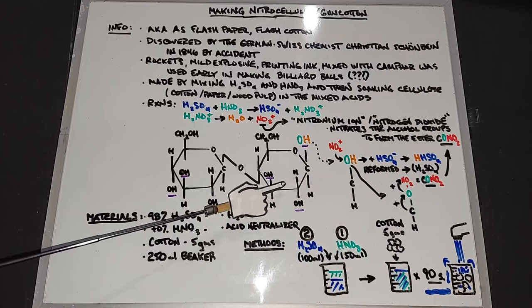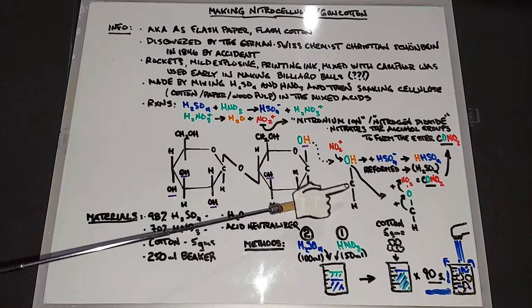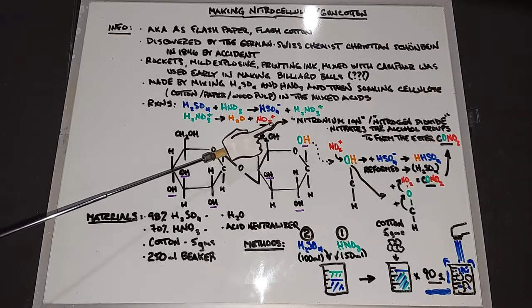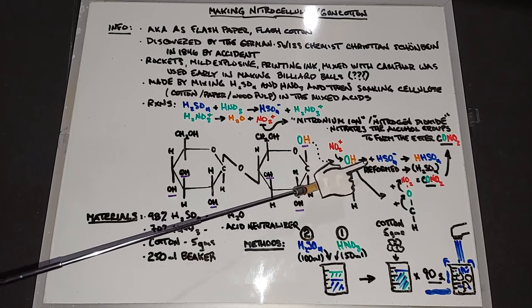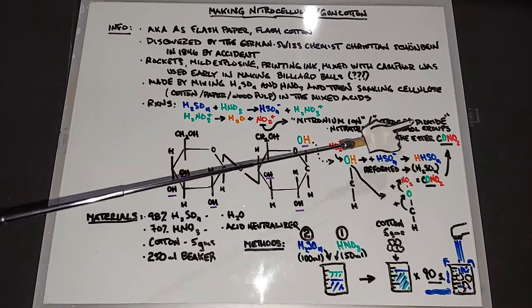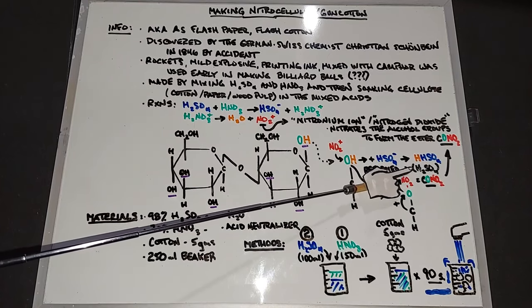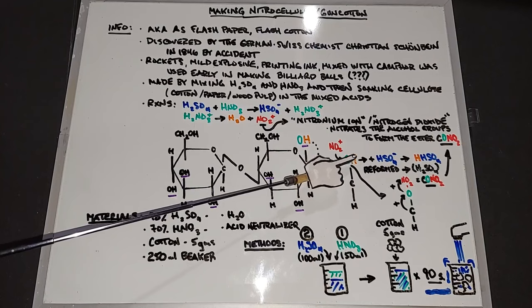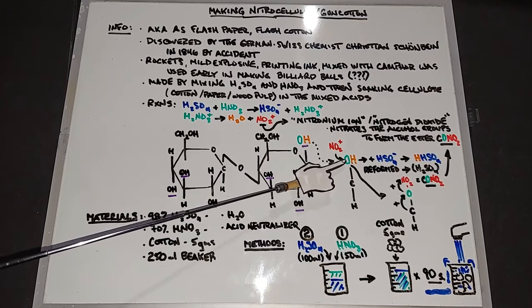This NO2 right here is the nitronium ion that was just produced. It attacks this OH group, especially this oxygen where it has a lone pair of electrons. When it does that, the hydrogen is released and combines with the HSO4 minus to form H2SO4. So the sulfuric acid is a catalyst in this reaction. As a catalyst it's not used up, it's just there to help the reaction move forward. It's initially used up here and then eventually reformed when it takes the hydrogen off the OH group.